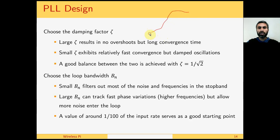A small zeta exhibits relatively faster convergence but it has a lot of overshoots, so it exhibits more oscillatory behavior at the start. So a good balance between the two is achieved with zeta equals 1 over square root 2, or 0.7.